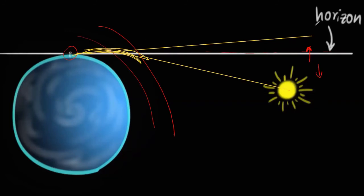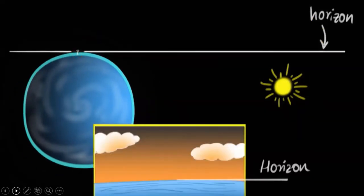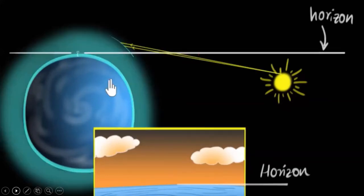We will always perceive light in a straight line. So though the Sun is below the horizon, we will still be able to see the Sun even before it has risen above the horizon. This is called advanced sunrise. The light rays come to us through the earth's atmosphere, bending as they travel.